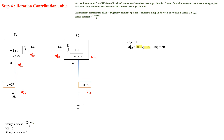In the first cycle, M dash BA is computed: BA rotation factor minus 0.25 multiplied by the sum of fixed end moments at joint B, which is minus 120. For M dash CB, the rotation factor is minus 0.286 multiplied by the fixed end moment sum of 120, plus foreign moment M dash BC equal to 30. The moment due to displacement contribution is 0.1, giving M dash CB as minus 42.9.